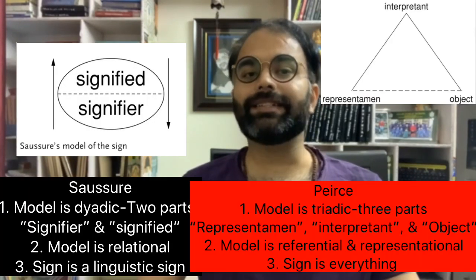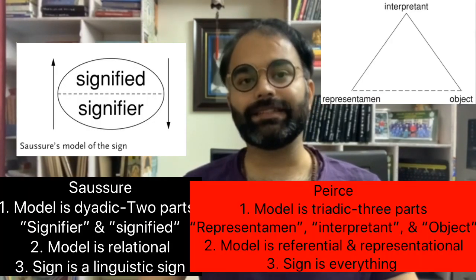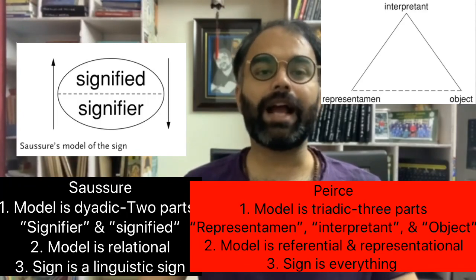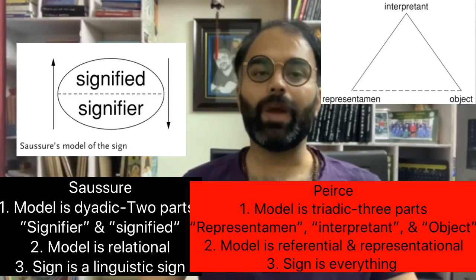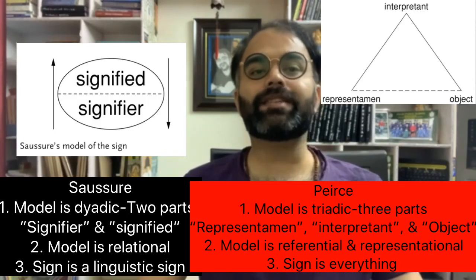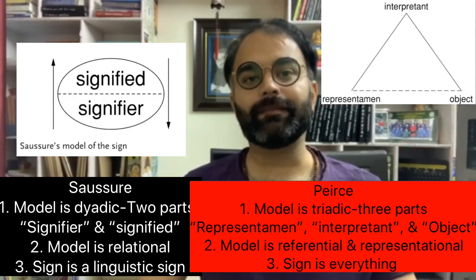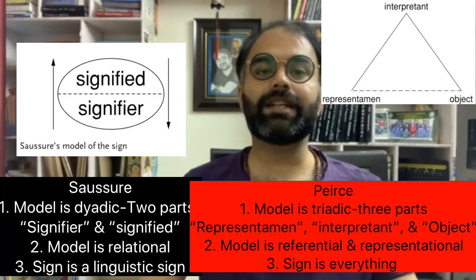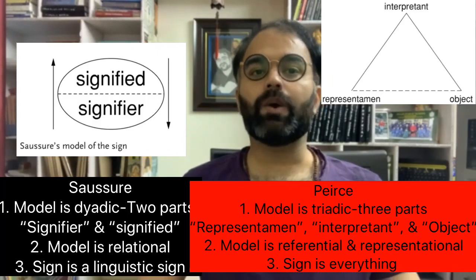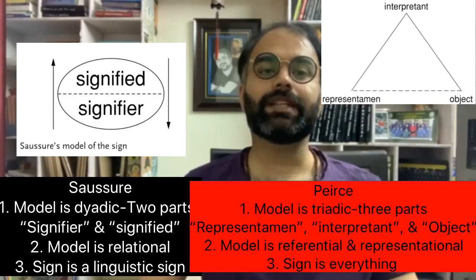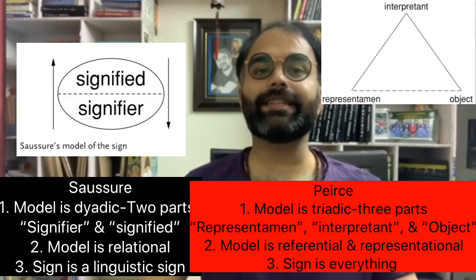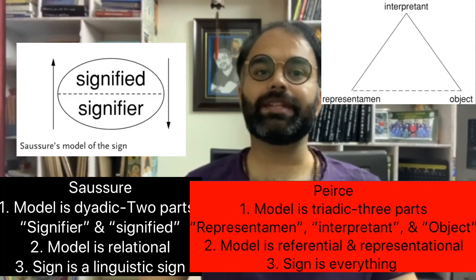Saussure's model is dyadic, meaning it has two parts: signifier and signified. Whereas Peirce's model is triadic, meaning it has three parts: representamen — how a sign is represented; interpretant — how a sign is interpreted; and object — what is represented.